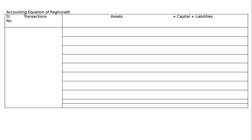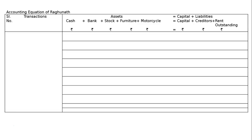Raghunath had the following transactions in an accounting year. To find the accounting equation of Raghunath, we have to draw the format: serial number, transactions, assets, capital plus liabilities. After reading the question carefully, we will be finding items like cash, bank, stock, furniture, motorcycle, capital, creditors, and outstanding expenses. We write the rupee symbol below each of these items.